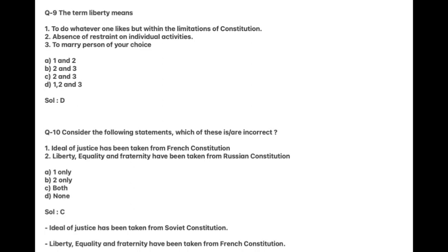Consider the following statements. Which of these are incorrect? One: The ideal of justice has been taken from the French constitution. Two: Liberty, equality and fraternity have been taken from the Russian constitution. Answer is C. The ideal of justice has been taken from the Soviet constitution. Liberty, equality and fraternity have been taken from the French constitution.